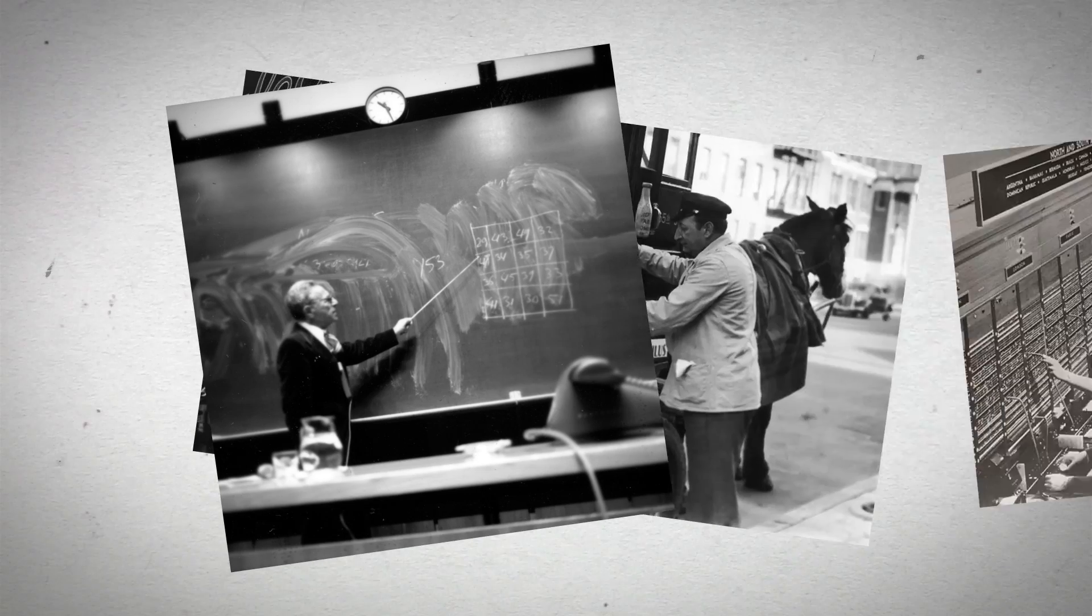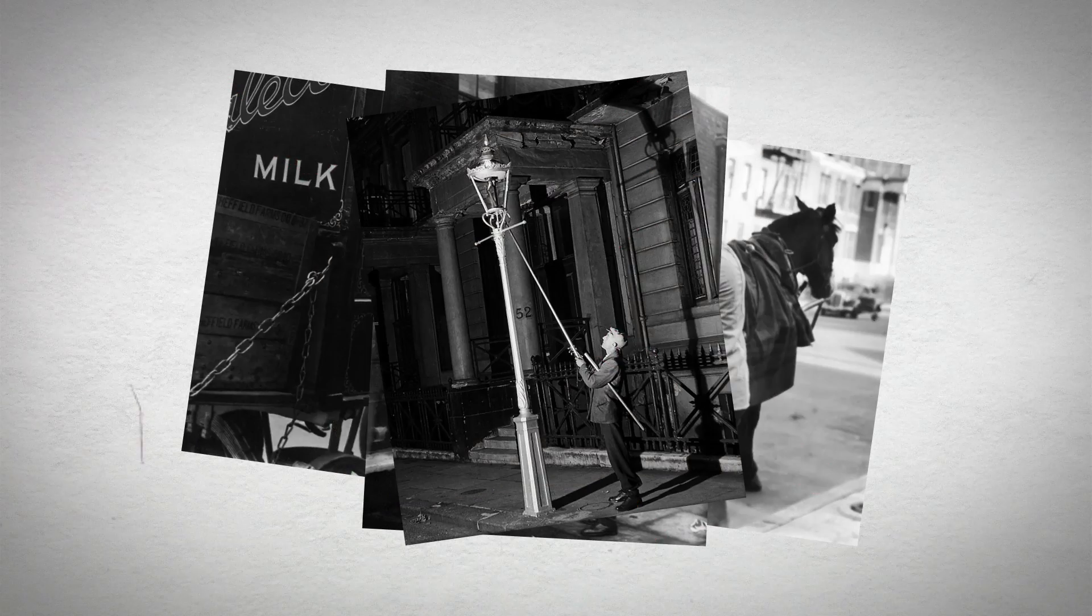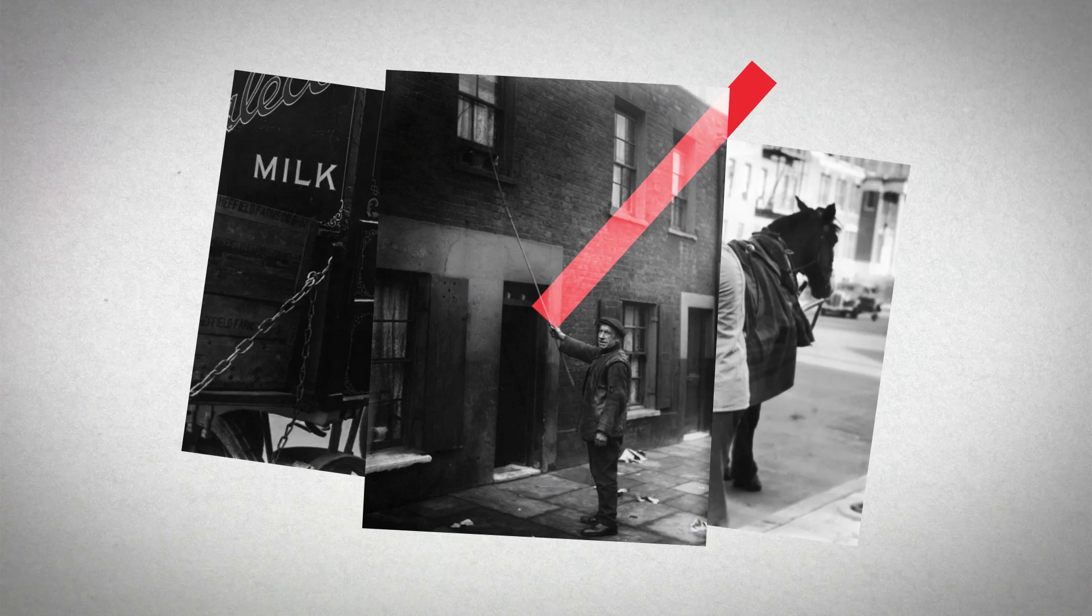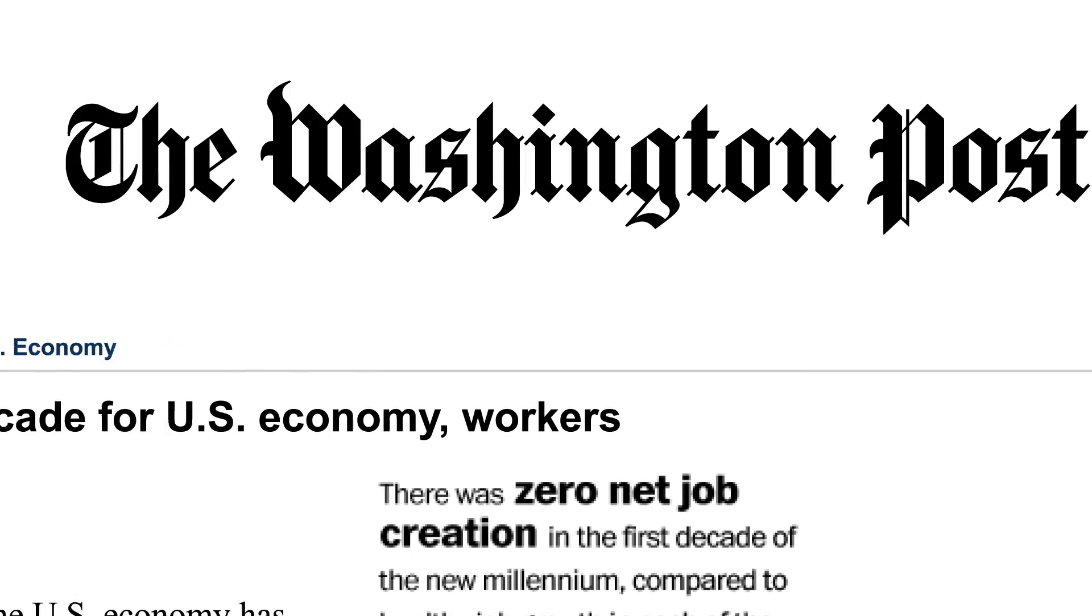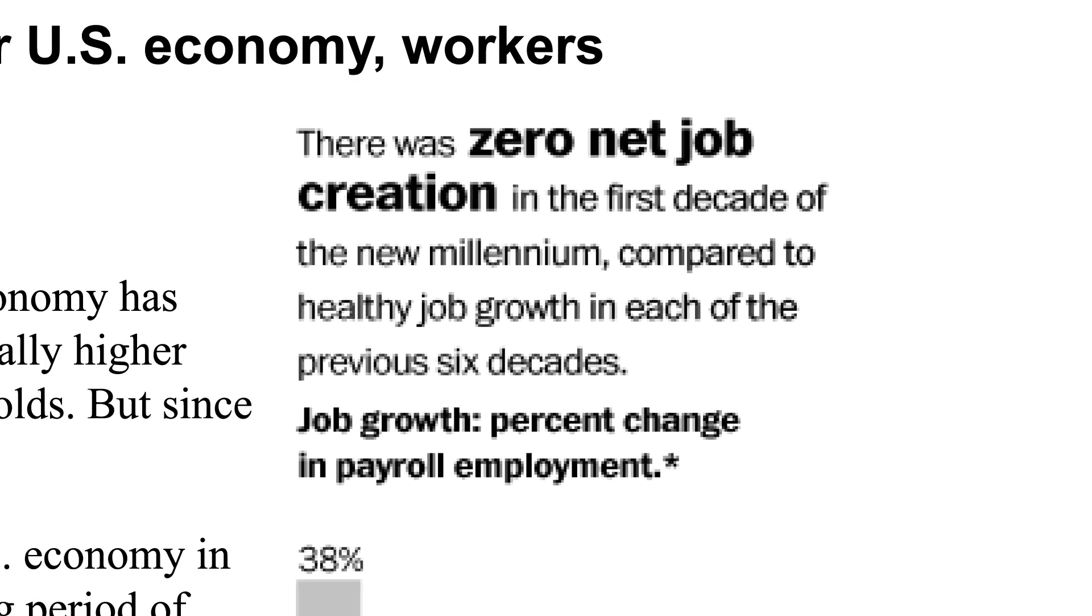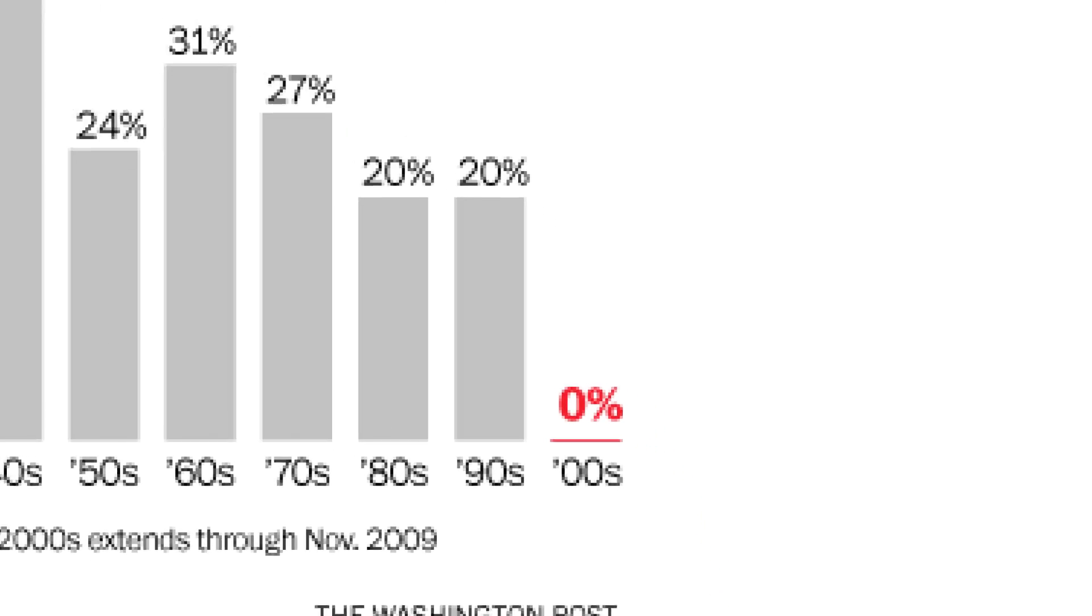At the end of the century many works have disappeared. The human calculators, the switchboard operators, the lighters of gas lamps, the knocker uppers, the milkman and others are replaced by automation. On January the 2nd 2010, the Washington Post titles that no jobs have been created in the US in the last decade. Never happened before.